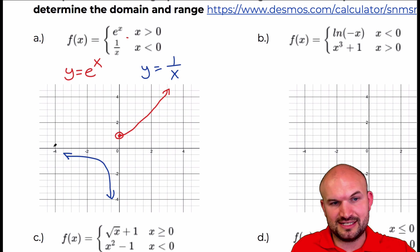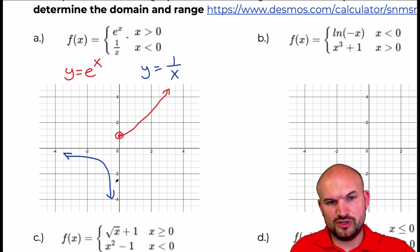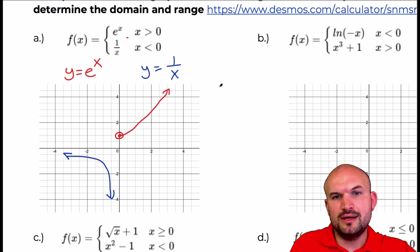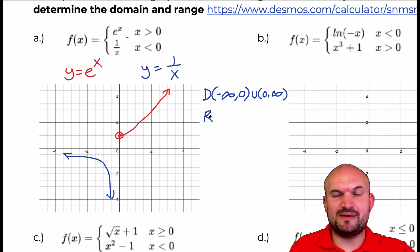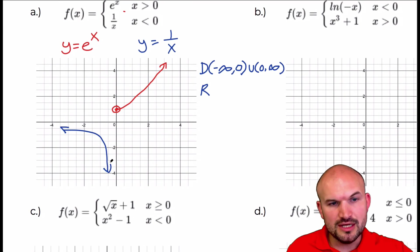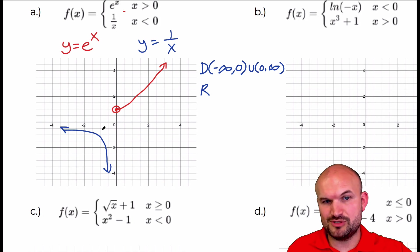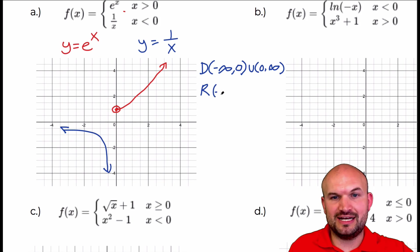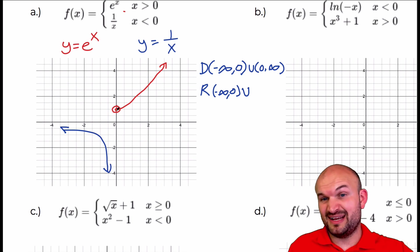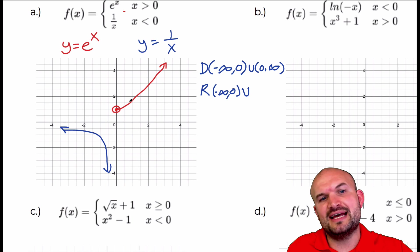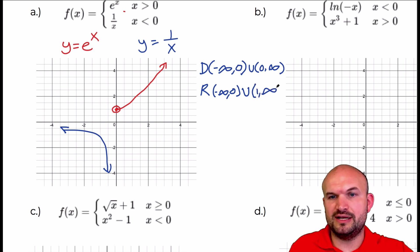Looking at the domain, it's going to continue going to the left but get really close to 0, and 0 is not included. So my domain is from negative infinity to 0, not including 0, then union 0 to infinity. The range — on the reciprocal function there's a horizontal asymptote at y equals 0, so my range is from negative infinity to 0, not including 0, then union 1 to infinity.